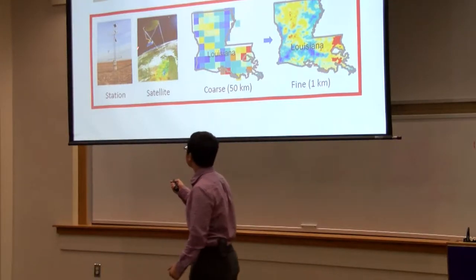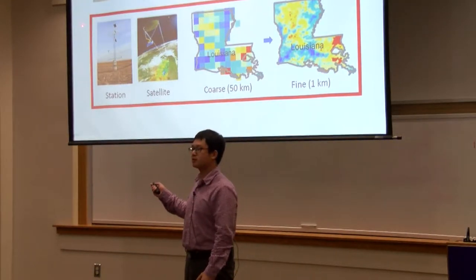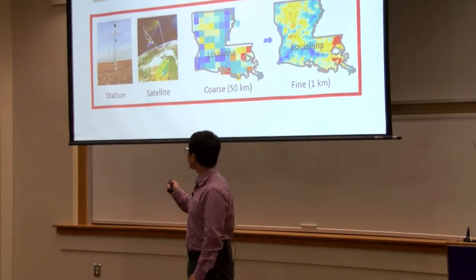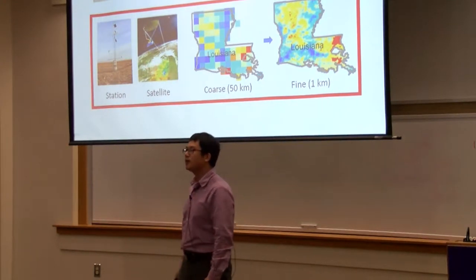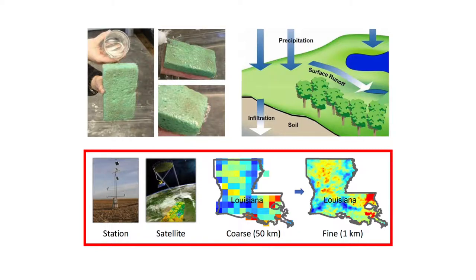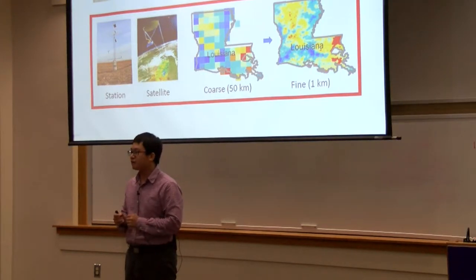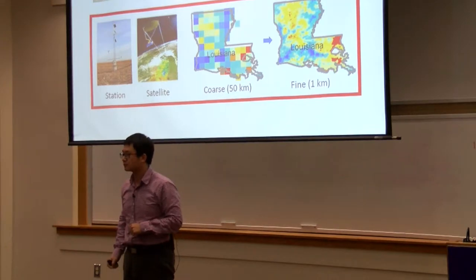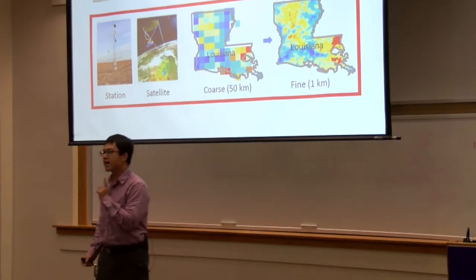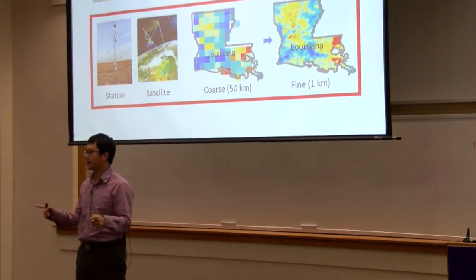Typically, we use two methods to measure soil moisture: station and satellite. The station-based method is accurate, but only measures on that very point. Satellite can provide soil moisture for a larger area, but only at a coarse spatial resolution — specifically, it measures every 50 kilometers with limited accuracy. So the challenge is how to combine these two methods.